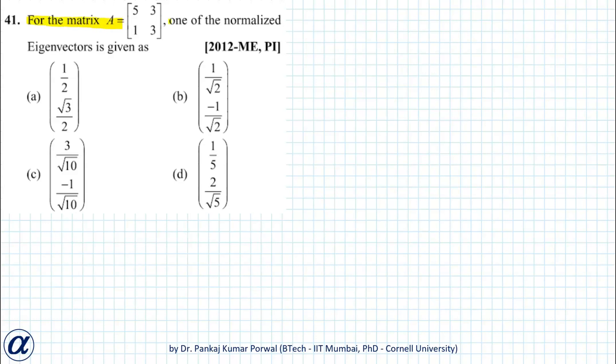For the matrix A, one of the normalized eigenvectors is given. So let's check by multiplying.